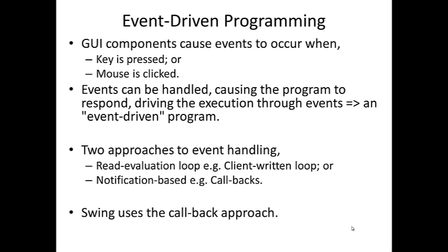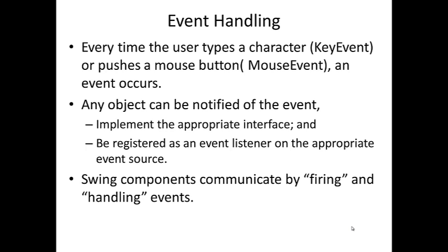Swing, in this particular example, uses the callback approach. So when something happens, we're notified. Every time the user types a character — a key event — or pushes a mouse button — a mouse event — an event occurs. Any object can be notified of the event if we implement the appropriate interface, and it must be registered as an event listener on the appropriate event source. Swing components communicate by firing and handling events, so the component fires the event and then handles what that event happens to be.